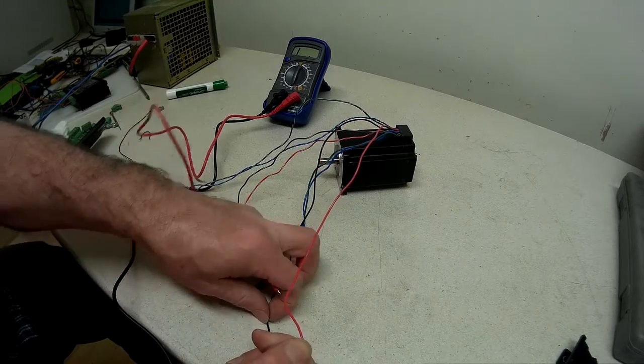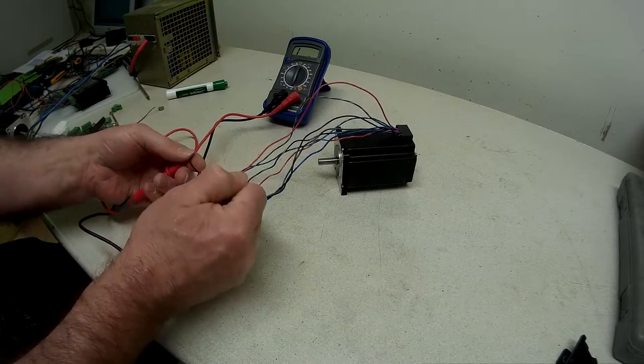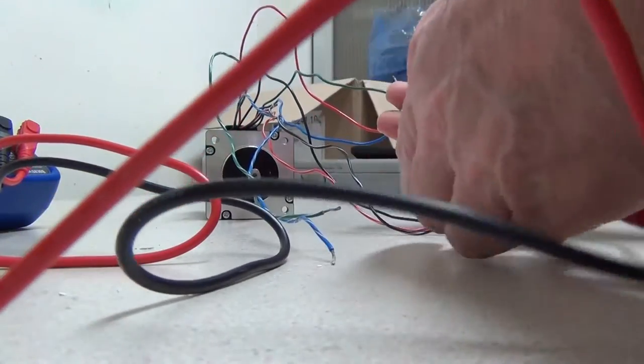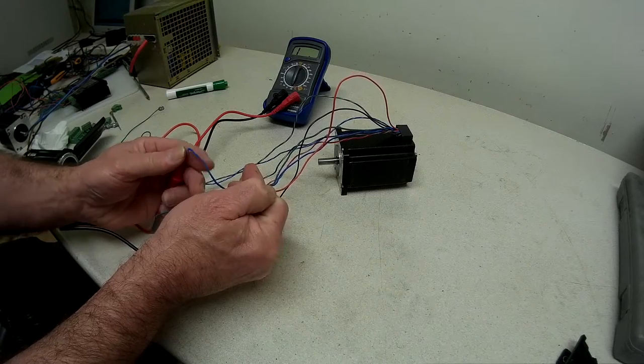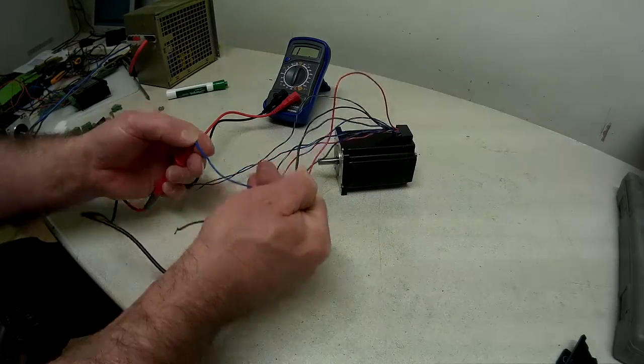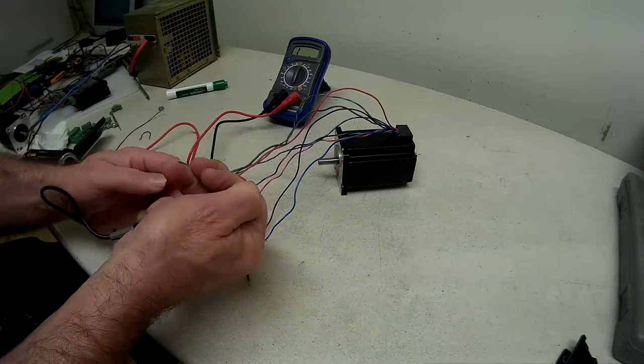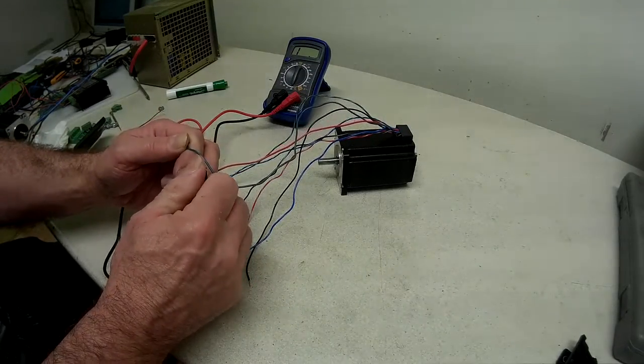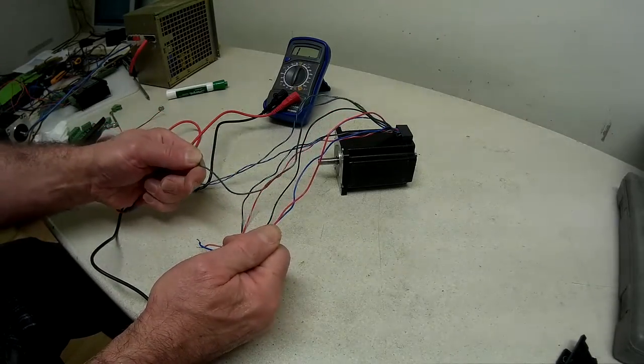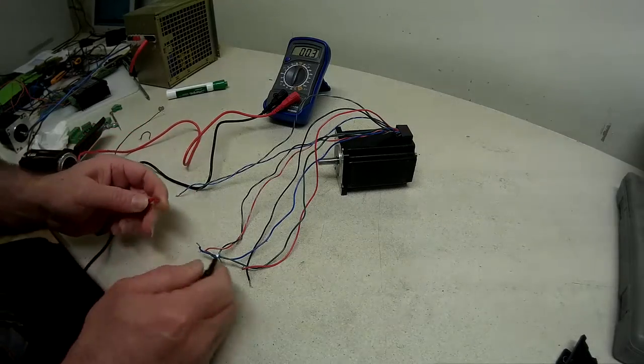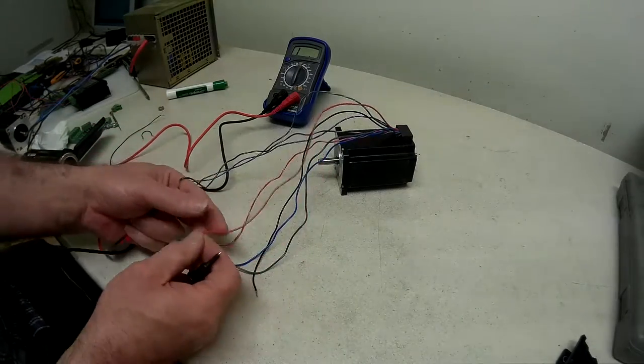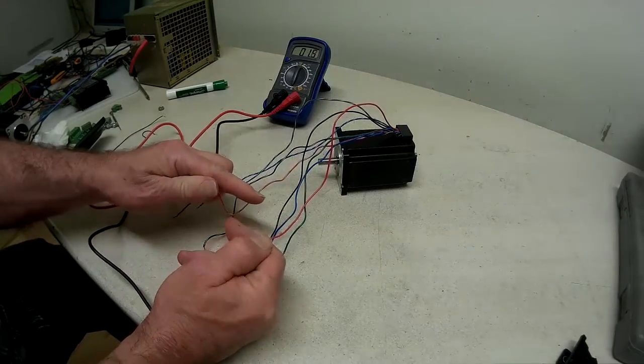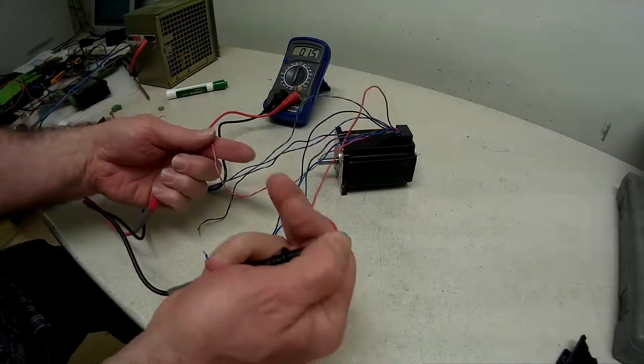Now if we start off with the red lead and then connect to the black lead, no connection. Red and blue, nothing. Red and green, nothing. Let's have a look at what we've got here. We've got a red and the red stripe.